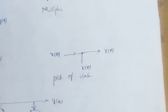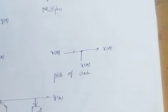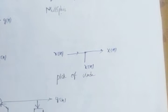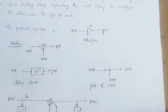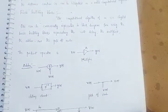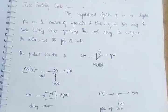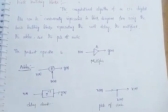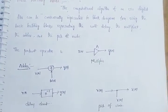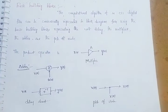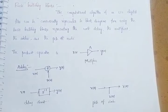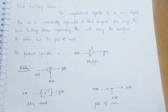These are the basic building blocks. In the basic building blocks, we have four very important types: product operation, addition, delay, and pick off node. With the help of these basic building blocks, we can construct the block diagram.